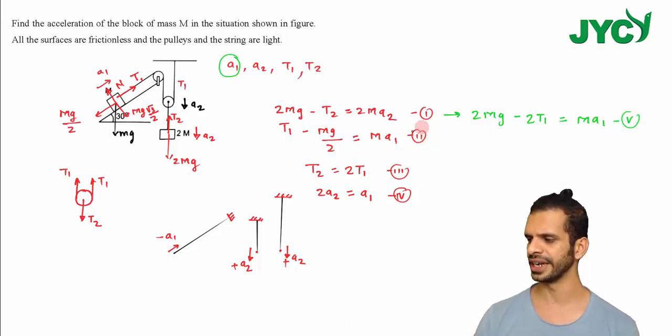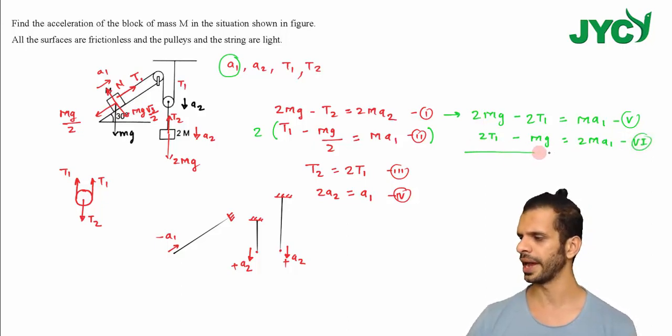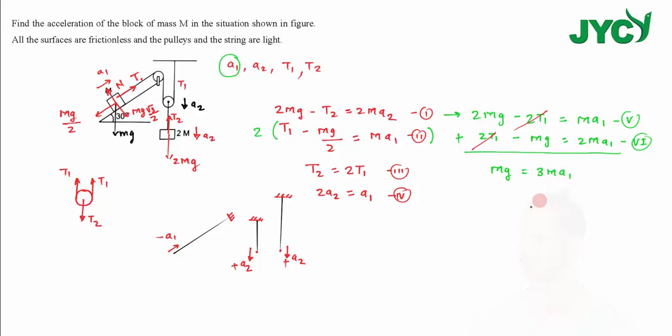From the second equation, combining with T2 equals 2T1, after adding equations I get 2MG minus 2T1 equals 3MA1. This gives MG equals 3MA1, so A1 equals g by 3. This is the acceleration of the block of mass M.